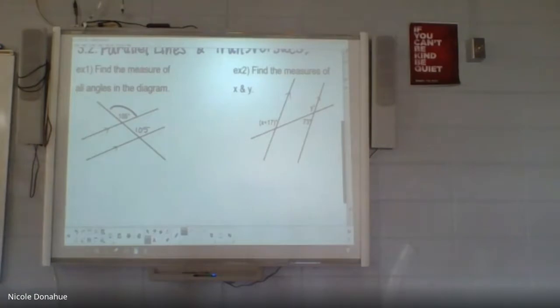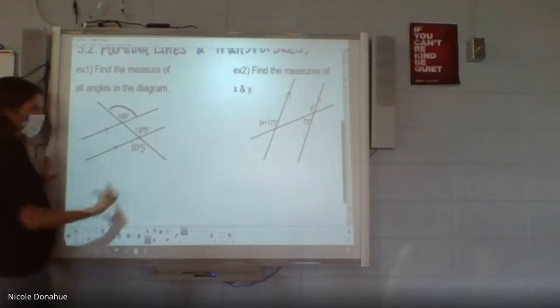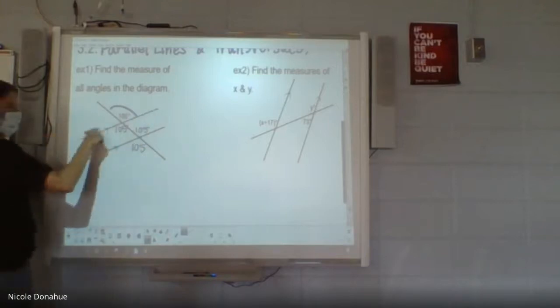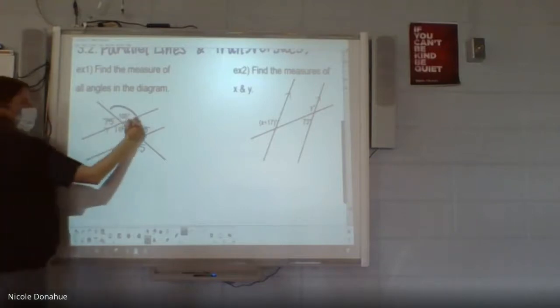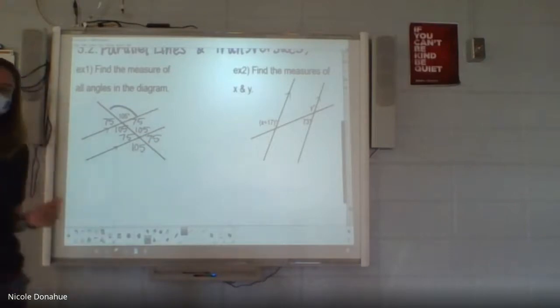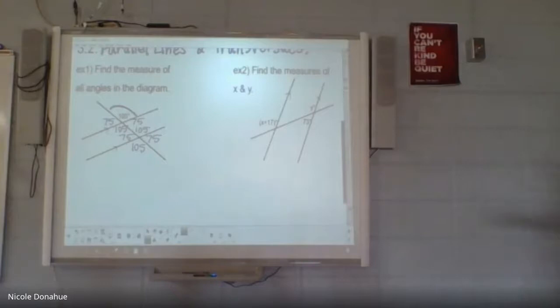So in this, if I know this is 105, this is also 105 because of corresponding angle. 105 and 105 are corresponding. Or you could have found that this one is also 105, and that's either alternate exterior or vertical. We have vertical here. Once I know those four, all the other ones are linear pairs. So 105 and this little angle should add to 180. That'd be 75. So when I have parallel lines, all I need to know is the one angle and I have a whole bunch of angles that are pinned around.